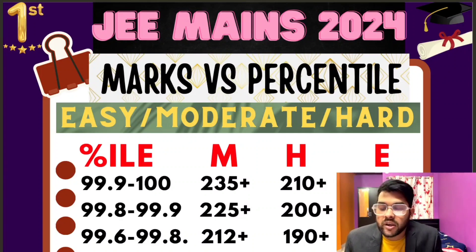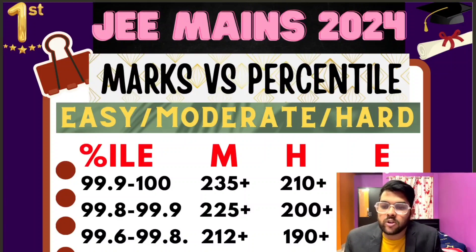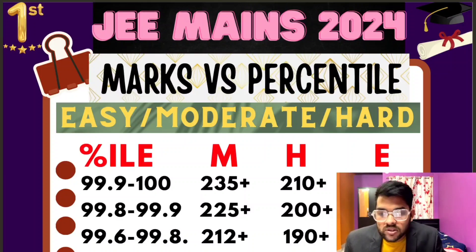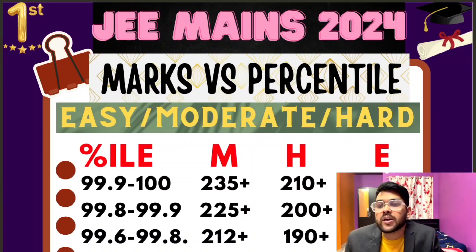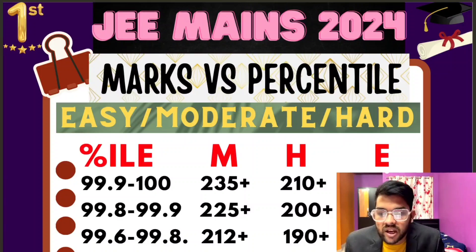There will be three types of data: easy paper, moderate paper, and hard paper. Your shift may be easy, moderate, or hard, so you have to be prepared for all types. I will also provide data on minimum percentile for CSE branch in NITs, minimum marks for NITs, IIITs, GFTIs — everything on this channel, so please subscribe.